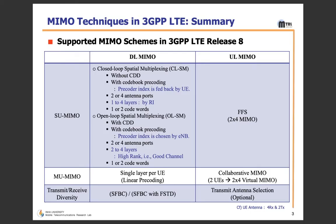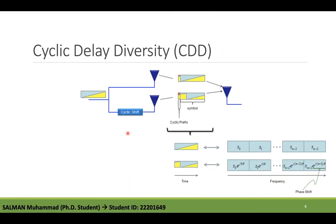Closed-Loop Spatial Multiplexing is implemented without CDD, while Open-Loop Spatial Multiplexing (OLSM) is implemented with CDD. Both closed-loop and open-loop spatial multiplexing are implemented with codebook precoding. Let me explain codebook precoding in multi-antenna techniques.